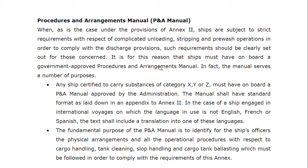The P&A Manual — short for Procedures and Arrangements Manual — is a manual to identify the arrangement and equipment required to enable compliance with NX2. It identifies for ship's officers all operational procedures with respect to cargo handling, tank cleaning, slop handling, residue discharging, ballasting, and de-ballasting. This is the exact text from the regulation.